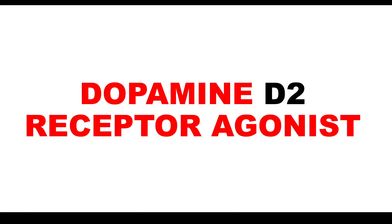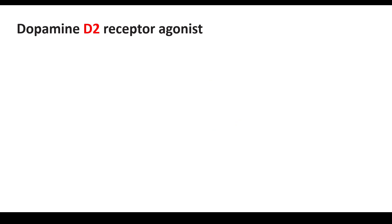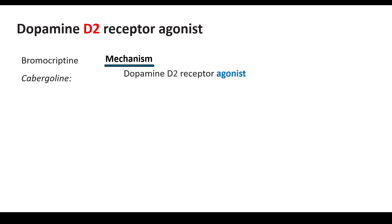Welcome back to the channel. Let's learn about the dopamine D2 receptor agonists. Under this we have two drugs, namely bromocriptine and cabergoline. The mechanism of action — what you need to remember for your exam — is that they are specifically D2 receptor agonists.